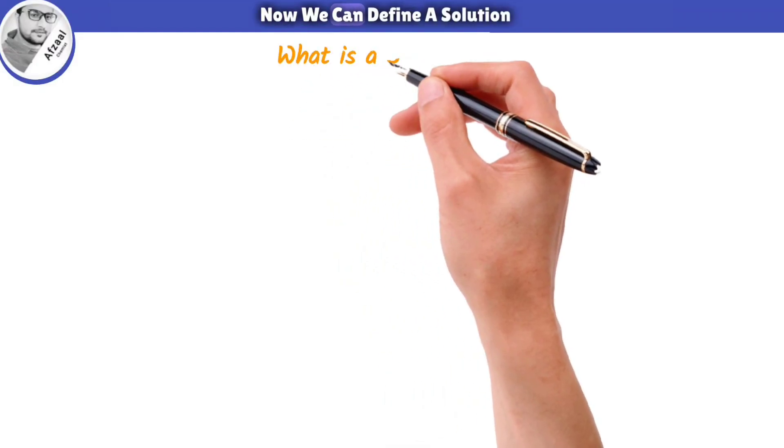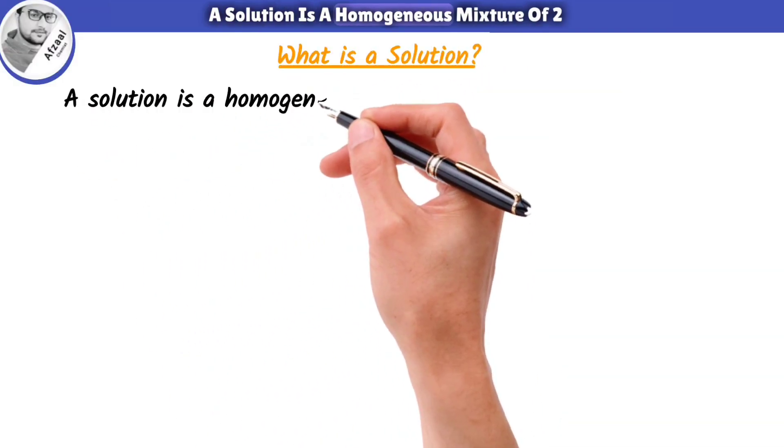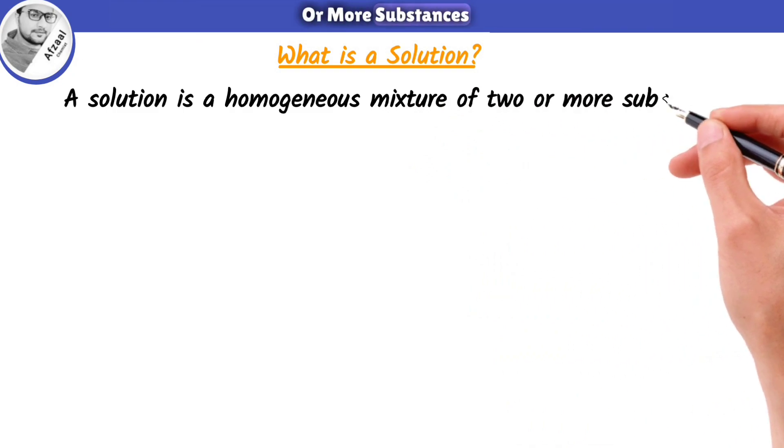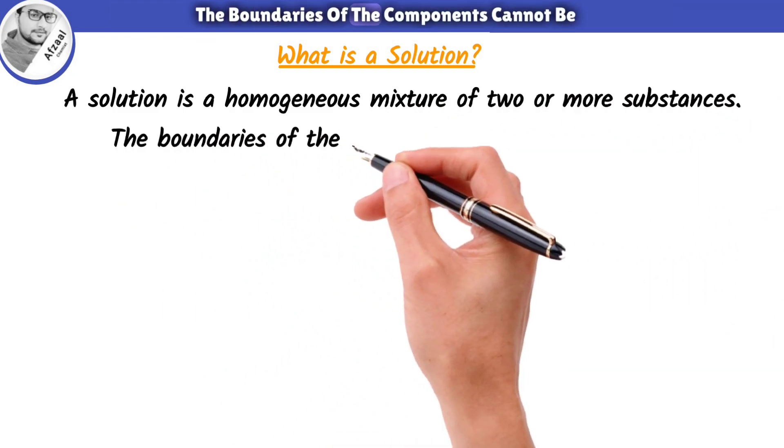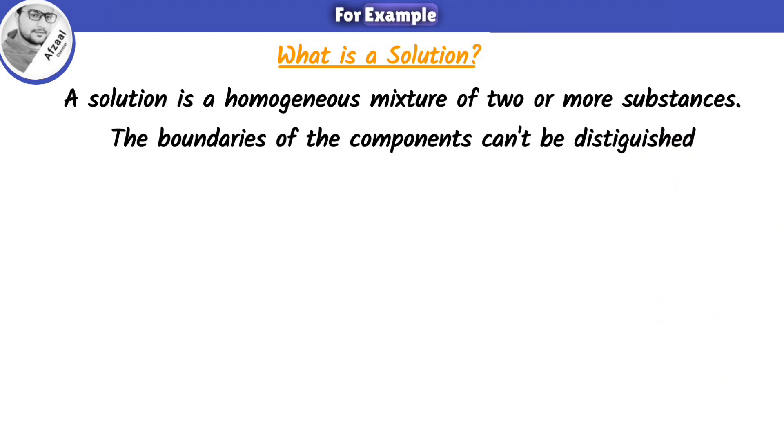Now we can define a solution. A solution is a homogeneous mixture of two or more substances. The boundaries of the components cannot be distinguished.